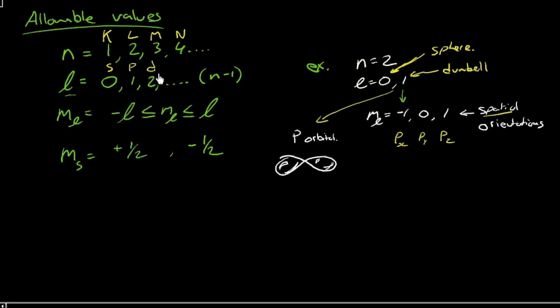And then d is l equals 2. And so on. And f would be next. We'll stick around with s, p, and d for this course. So we've described the principal quantum number, could use either uppercase letters or numbers. The angular momentum quantum number, most frequently these letters s, p, d, f are used.